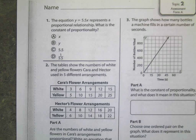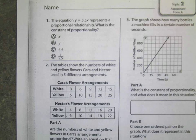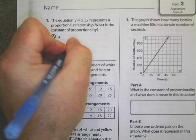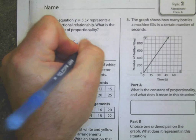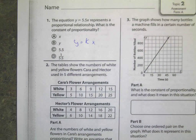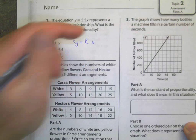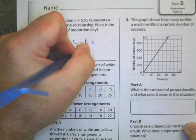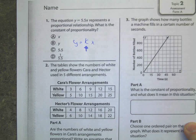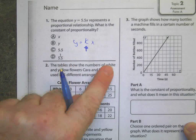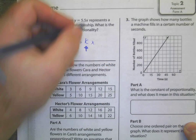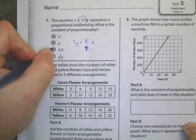Question number one: the equation y equals 5.5x represents a proportional relationship. What is the constant of proportionality? You should already have on your page the formula y equals kx. k is my constant of proportionality — the number that goes in front of x, that's going to be my constant of proportionality.